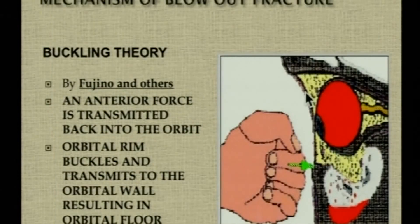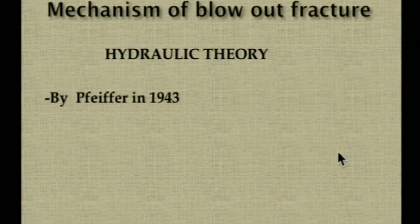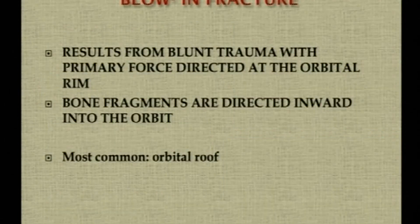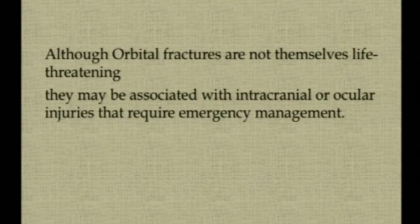The mechanism of blowout fracture: the earlier buckling theory proposed that force on the rim buckled and transmitted to the floor or medial wall. The more accepted hydraulic theory by Pfeiffer states that an object larger than the horizontal diameter of the orbit raises intraorbital pressure, causing the orbital floor or medial wall to give way, with herniation of contents into the respective sinuses. When pressure falls, tissues may recoil and become entrapped at the fracture site. The blow-in fracture mechanism involves force directed at the orbital rim with fragments directed inward toward the roof, most commonly seen in orbital roof fractures. In conclusion, although orbital fractures are not themselves life-threatening, they may be associated with intracranial or ocular injuries requiring emergency management.